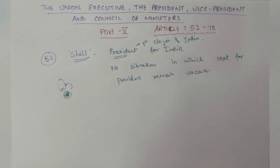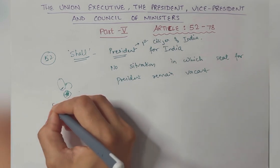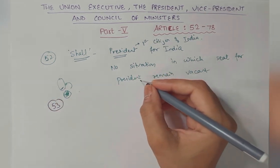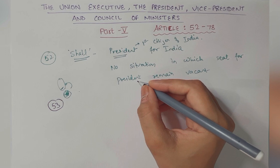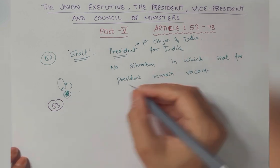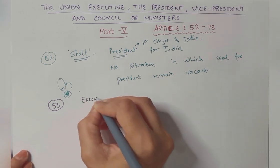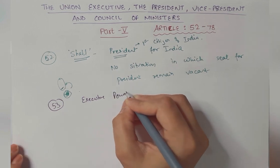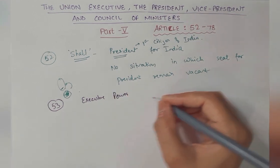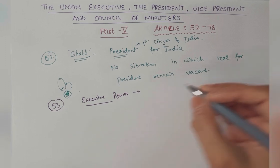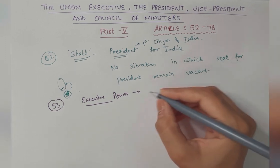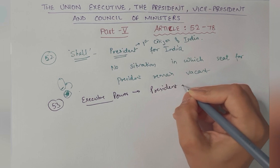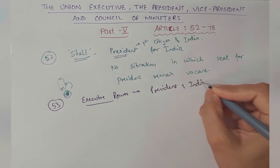Article 53 talks about all executive powers of India being vested with the President of India. Jitni bhi executive powers hoti hain — jaise humari karyapalika ki hoti hain — so executive powers jitni bhi hain, woh hamare Constitution ne President of India ke paas vest ki hain.